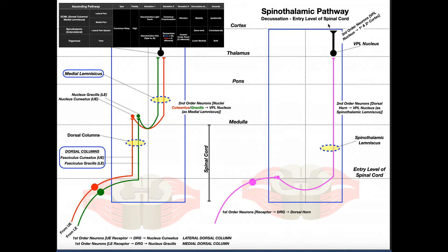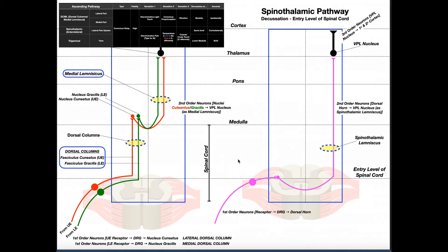A few key definitions: clusters of cell bodies outside of the central nervous system are called a ganglion — or plural, ganglia — while clusters of cell bodies inside the central nervous system are called a nucleus. For axons, those outside the central nervous system are termed nerves, and axons within the central nervous system are called tracts.